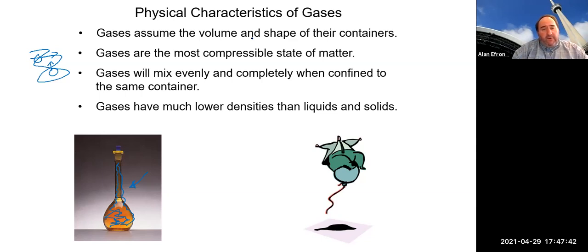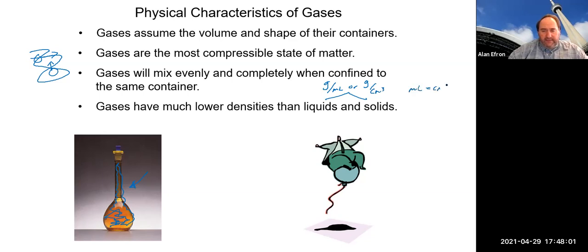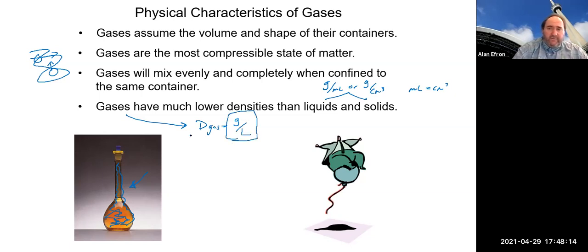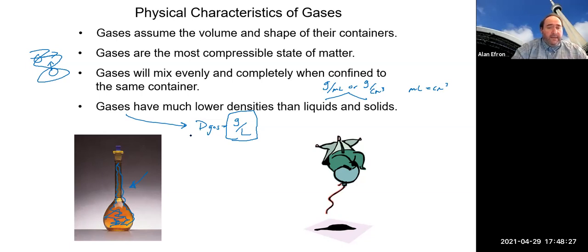Gases have lower densities than liquids and solids. While we typically express the density of liquids and solids in grams per milliliter or grams per cubic centimeter, the density of a gas is usually expressed in grams per liter.